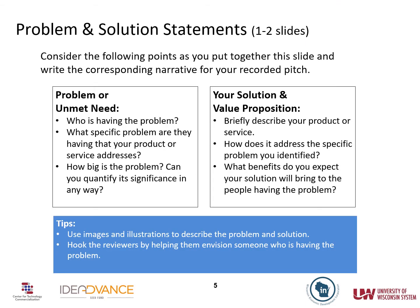If people don't understand the problem you are proposing to solve, they won't understand your solution. On this slide, set the stage by calling out the problem. Start by zooming in and making it personal — do you have this problem, or someone you know? Put the reviewers in the head of a person feeling this pain. Then zoom out: how many people have this problem? What are the impacts — money, time, health effects? Try to quantify the broad impact and demonstrate opportunity beyond your backyard. If you've talked with people to confirm this is a real problem, or have some other edge that gives you credibility, be sure to highlight it.